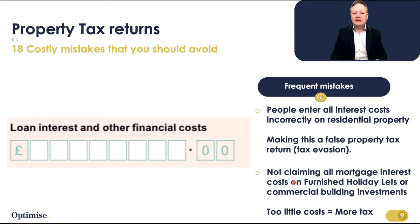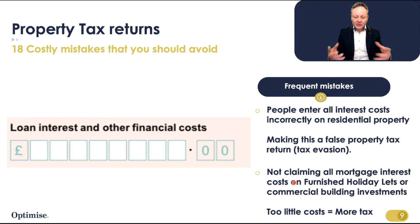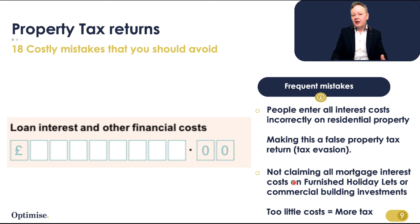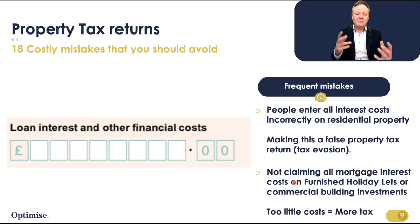Don't forget — Section 24, the mortgage interest relief cap, only affects residential property. If you have furnished holiday lets or commercial property lets, you can claim all the mortgage interest costs. But generic accountants simply do not look carefully at their tax returns. We only hire fully qualified accountants to do our tax returns. Who is submitting your tax return? Is it a qualified accountant? Probably not, especially when you're only paying £100–£200 for a tax return. You end up saving pennies but paying in pounds through the extra tax you're paying.